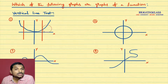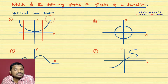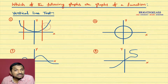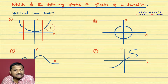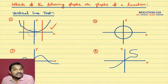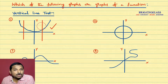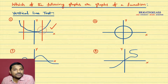Now, is this graph a graph of a function? Say yes or no? Yes, it is a graph of a function, because when we draw a vertical line, it cuts the graph at only one point.